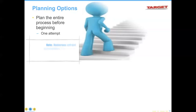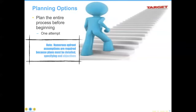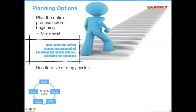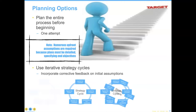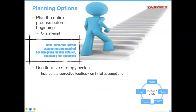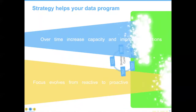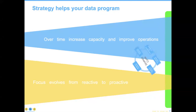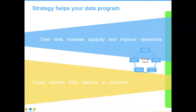You can plan the entire process — get one attempt and say we're going to get there in this series of steps. This requires numerous upfront assumptions, because plans have to be detailed and specific and objectives have to be reached. If instead I think about strategy as a cycle, I can use these cycles to focus in on and use corrected feedback to make sure that I continue to stay focused on things that are important to the organization. Over time, as I get good with this, the organization will have increased capacity and its ability to improve operations, and the focus evolves from reactive to proactive.